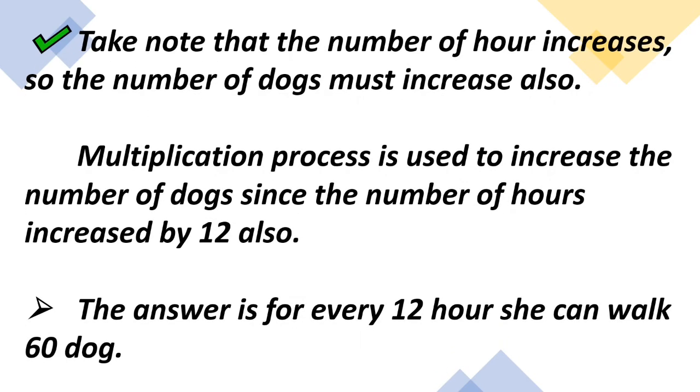Take note that the number of hours increases, so the number of dogs must increase also. Multiplication process is used to increase the number of dogs since the number of hours increase by 12 also. So the answer is: for every 12 hours she can walk 60 dogs.